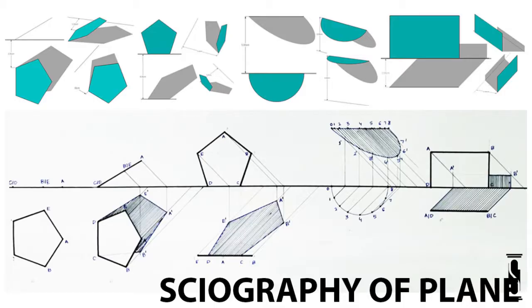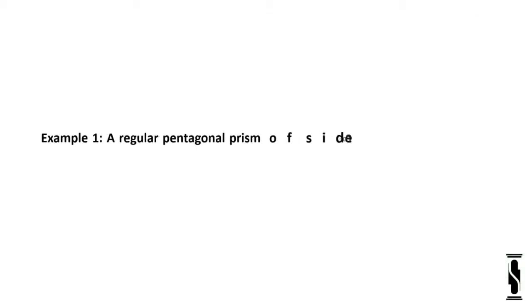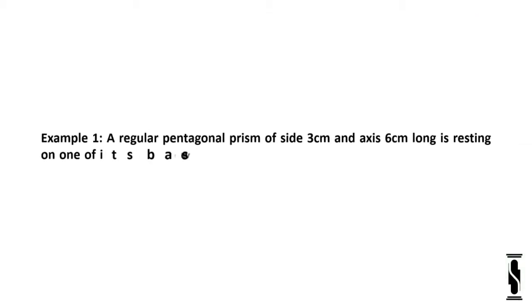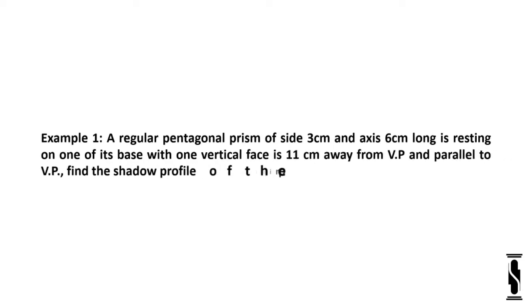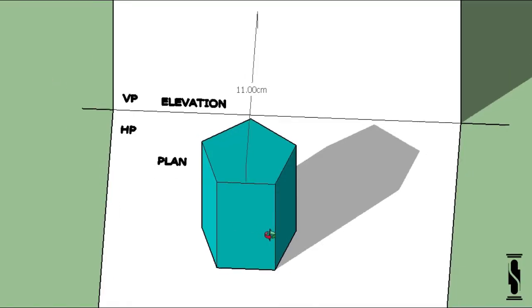Let's start with example number one. A regular pentagonal prism of size 3 centimeter and axis 6 centimeter long is resting on one of its base, with its one vertical face 11 centimeter away from VP and parallel to VP. Find the shadow profile of the prism.